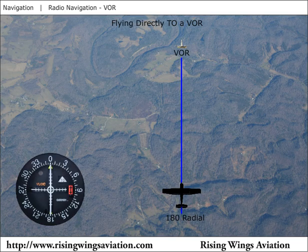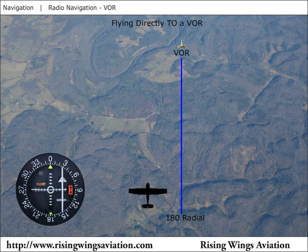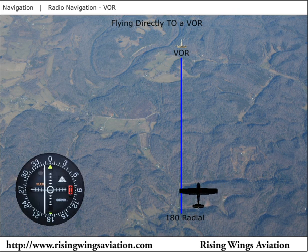However, the airplane will drift with the wind unless a crosswind correction is applied. To correct for the wind, maintain your heading and observe the movement of the needle, which is referred to as the course deviation indicator, or CDI. If the needle moves right or left, it indicates the need to move the airplane right or left to stay on course to the station.